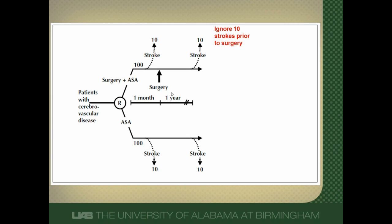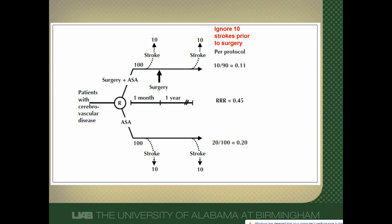So let's just ignore these 10 patients who had a stroke before surgery — because how could you count those strokes against surgery when surgery hadn't even happened yet? Let's just throw them out. So now instead of 100 patients in this arm, we'll have 90. Looking at the outcomes, we have 10 strokes out of 90 patients for an 11% event rate. In the aspirin arm, 20 total strokes occurred — 20 out of 100 patients, or 20%. It really looks like surgery did a good thing: it reduced the stroke rate by 45%. This is called a per-protocol analysis, meaning you only count events in people who actually received the intervention. You ignore the people who didn't get it.